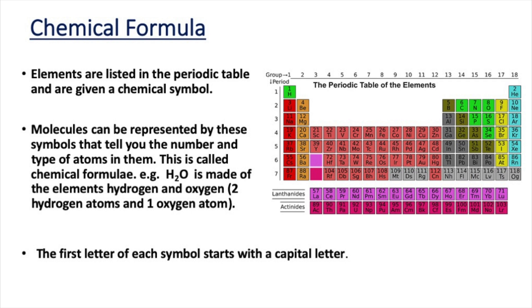Let's first start by looking at what we mean by chemical formulae. Elements are listed in the periodic table and each element has its own chemical symbol. Molecules can be represented by these symbols — this is what we mean by chemical formulae — because the chemical formula tells you the number and types of atoms that are present. It tells you which elements are present and how many atoms of each element are present. If we look at water, H2O, as our example, that tells us there are two hydrogen atoms and one oxygen atom in every molecule of water.